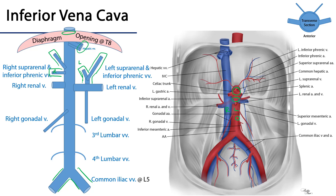Both renal veins, left and right, are going to be direct tributaries into the IVC. The gonadal veins will also have an asymmetry, with the right gonadal vein draining directly into the IVC, whereas the left gonadal vein is a tributary of the left renal vein.